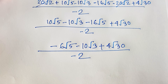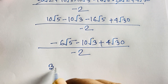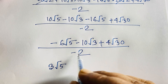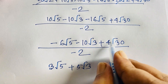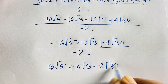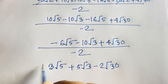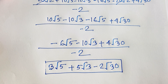Dividing each term by minus 2: −6√5 ÷ −2 = 3√5; −10√3 ÷ −2 = 5√3; 4√30 ÷ −2 = −2√30. So the final answer is 3√5 + 5√3 − 2√30. Thank you all — if you enjoyed this video, please subscribe for more interesting videos. Goodbye, take care.